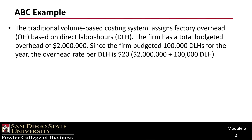The traditional volume-based costing system assigns factory overhead based on direct labor hours. The firm has total budgeted overhead of $2 million. Since the firm budgeted 100,000 direct labor hours for the year, the overhead rate per direct labor hour is $20 — that's the $2 million divided by 100,000.